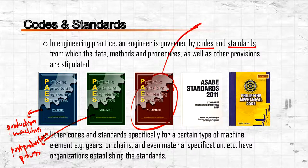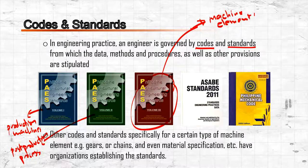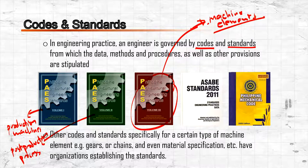Volume Three is probably the most used in this course because it includes topics about machine elements like pulleys, flat belts, chains, chain and sprockets, and similar components. It includes computations and specifications about these machine elements.